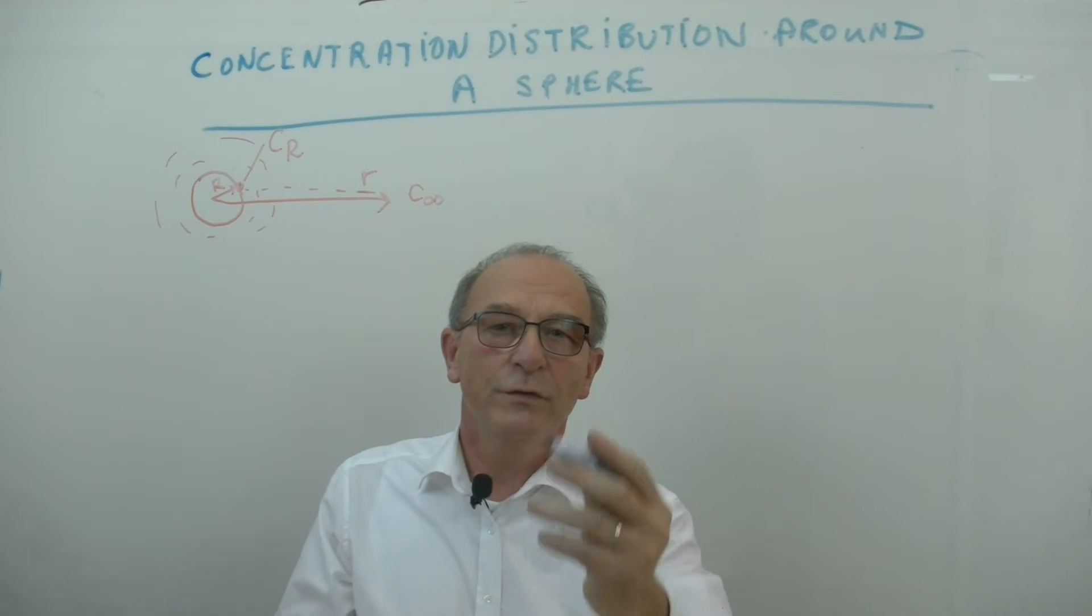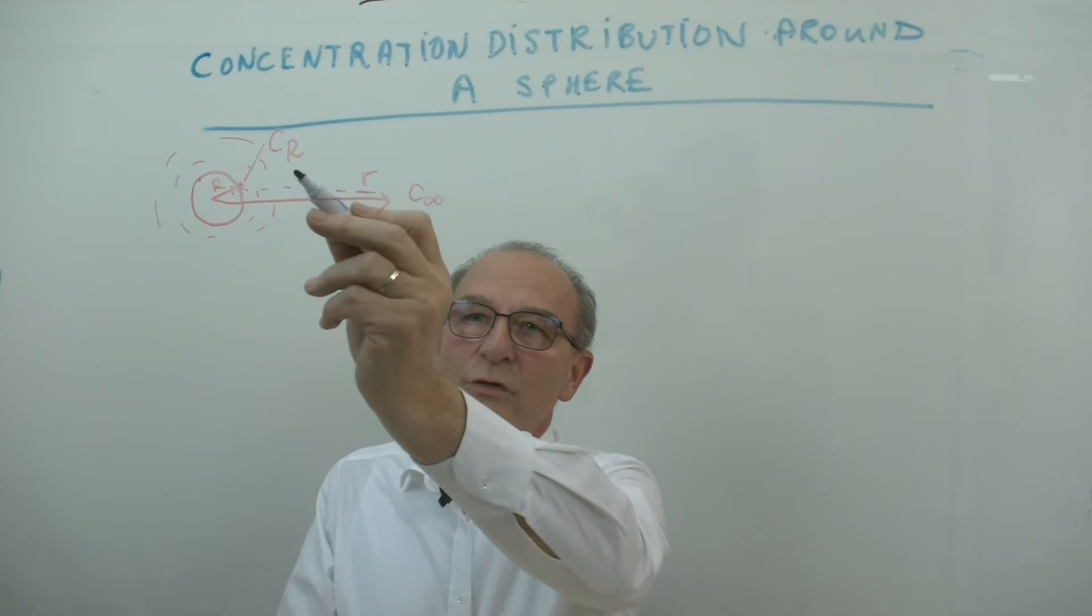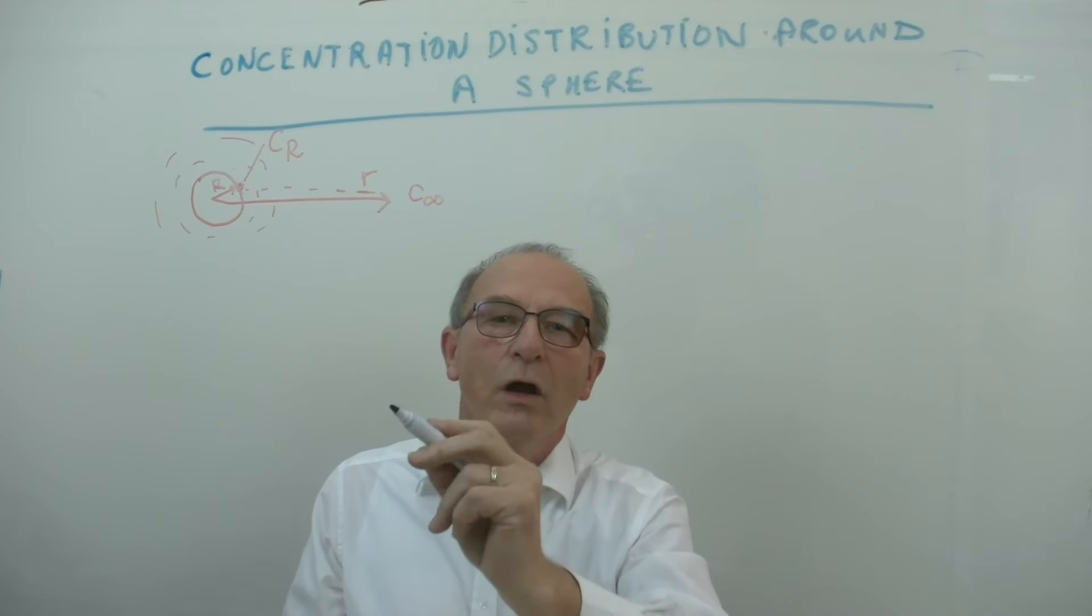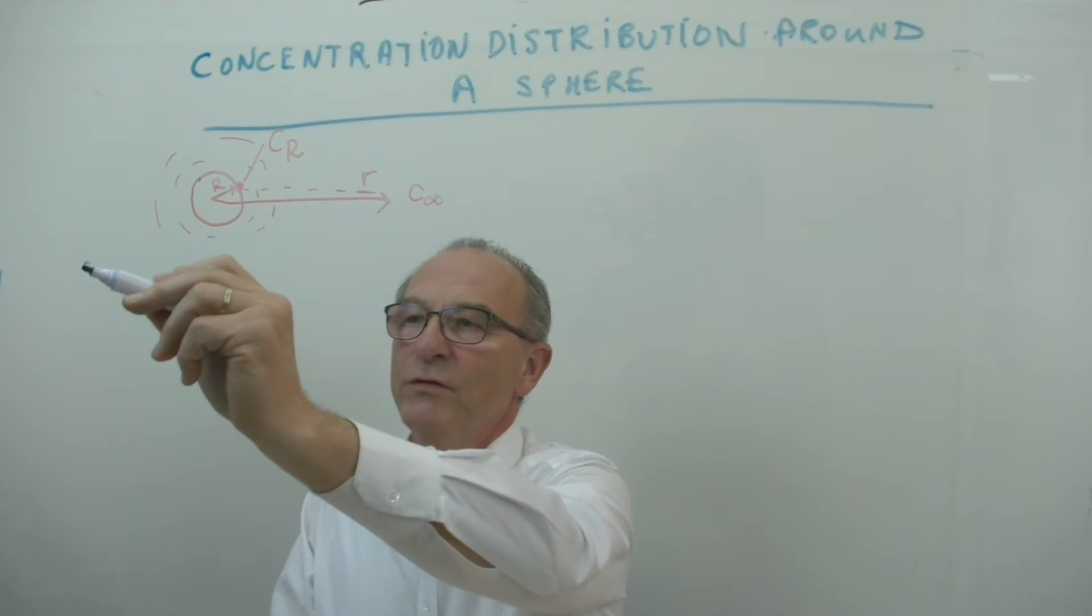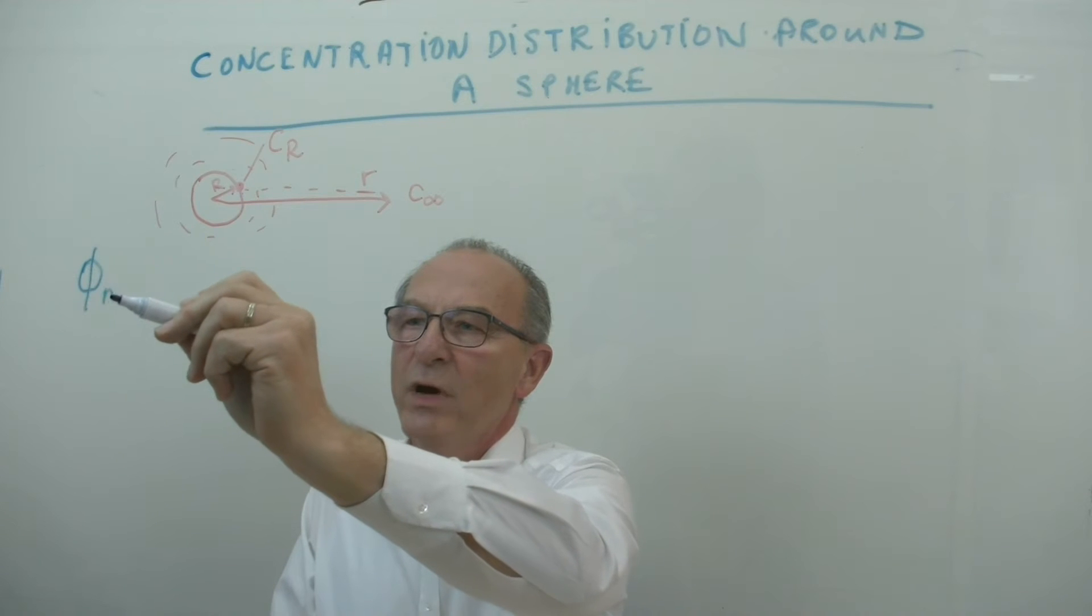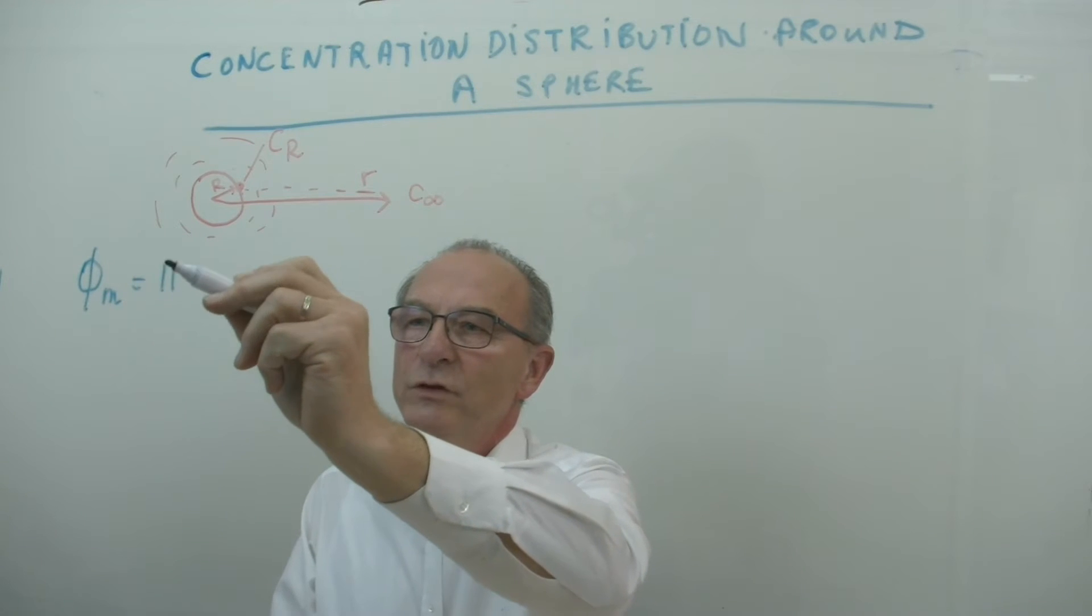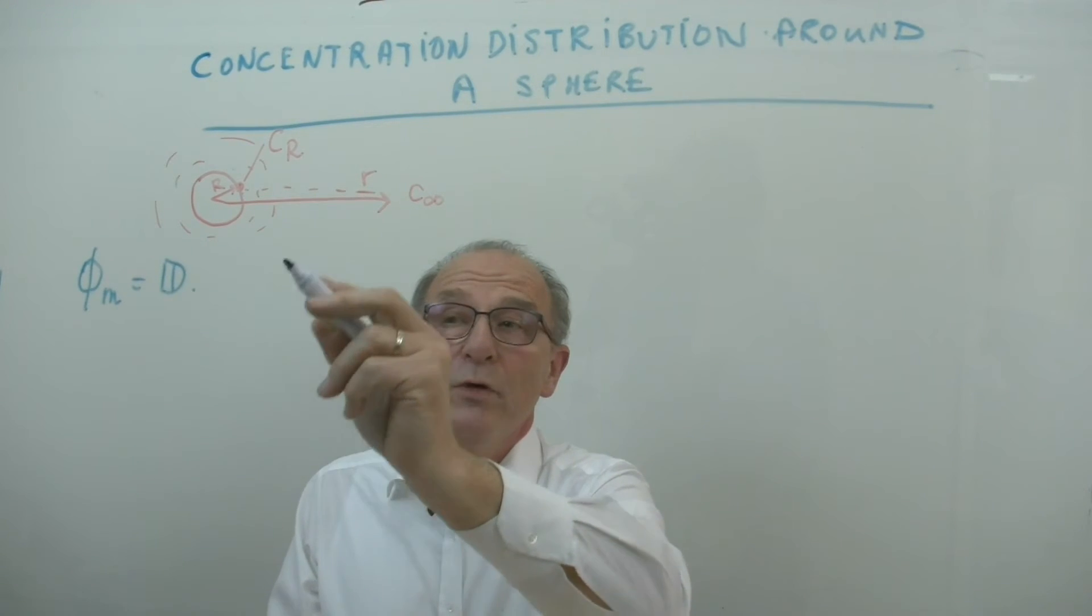Well how do we solve this problem because we want to know the concentration gradient around this pill. Well then we start with Fourier's law writing down that the mass flow rate is equal to the diffusion coefficient multiplied by